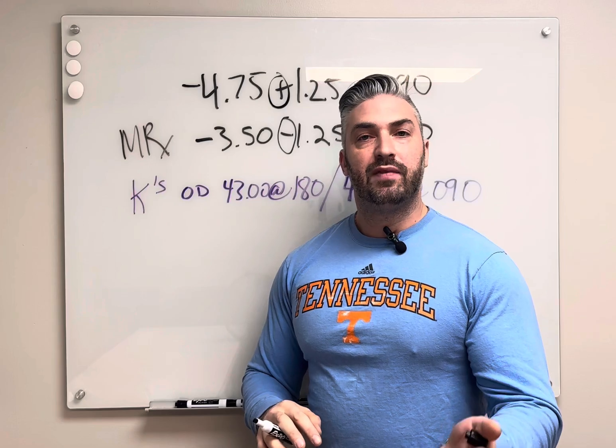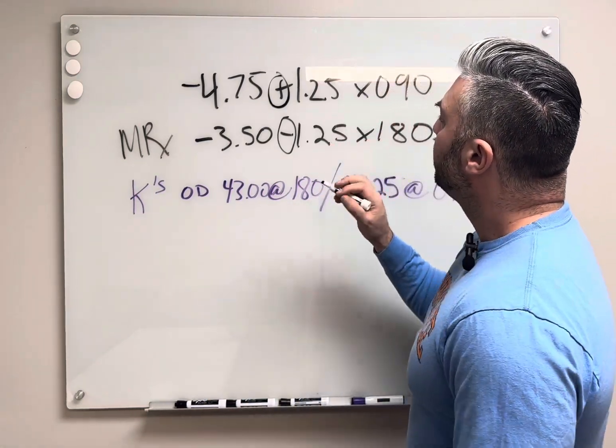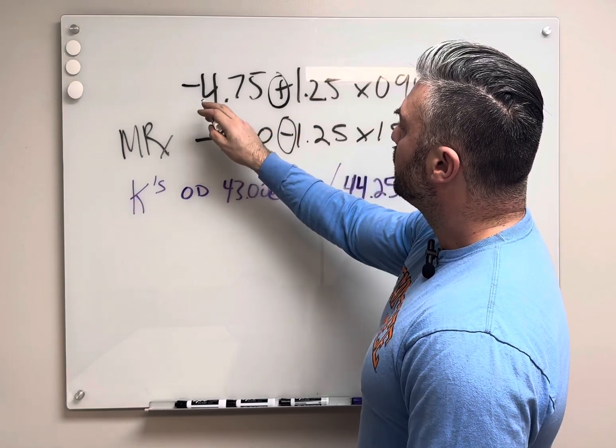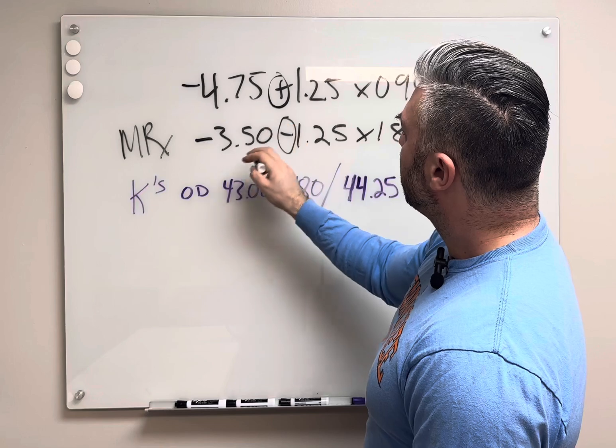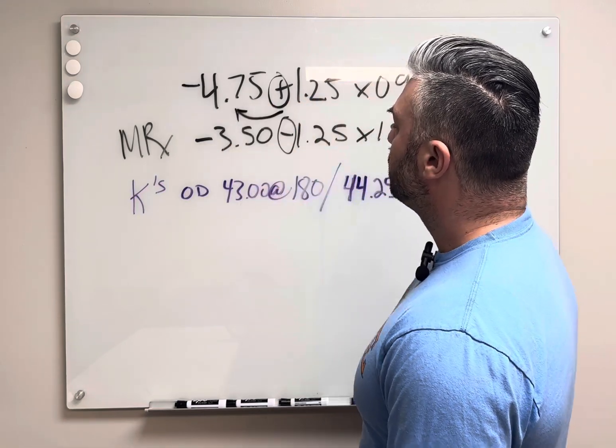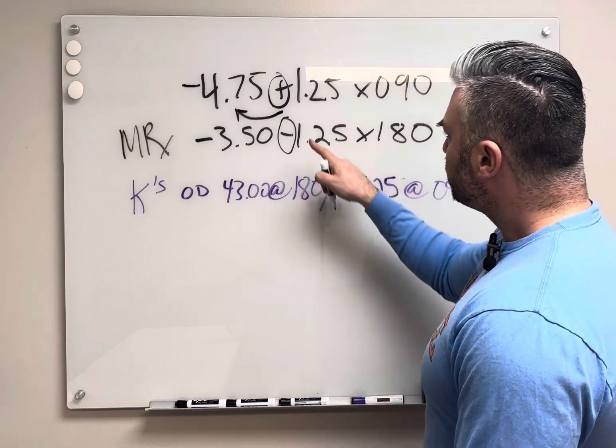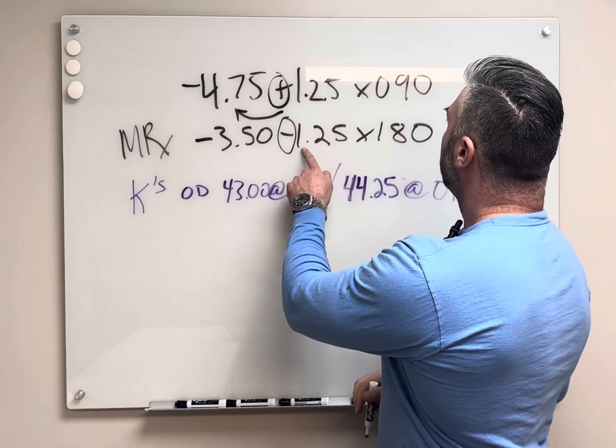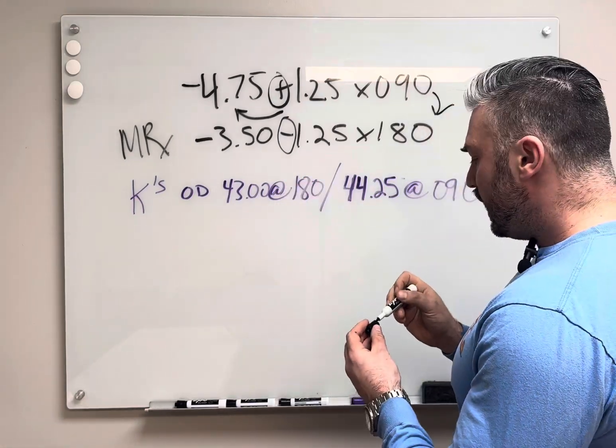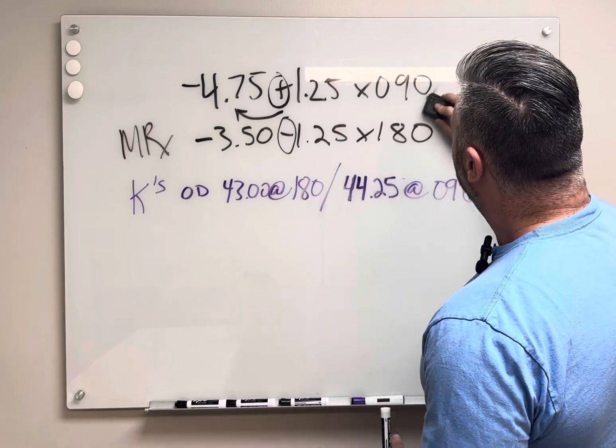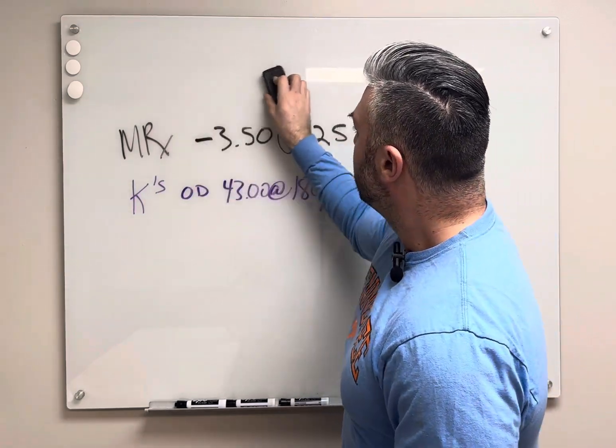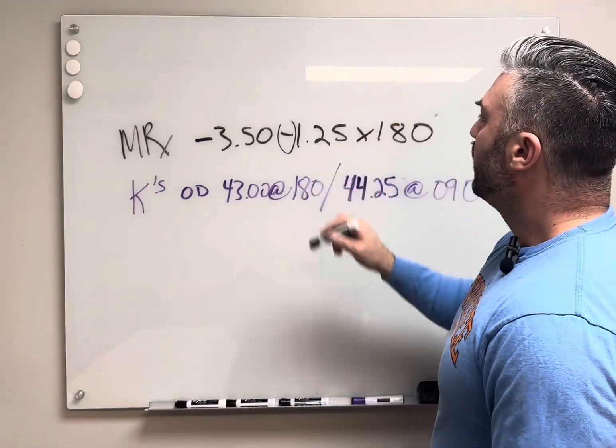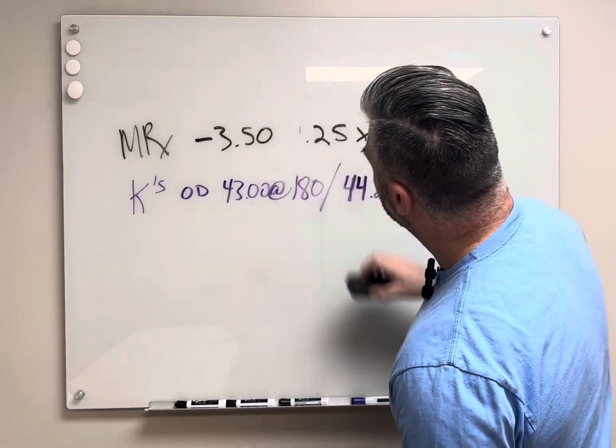So we know if we see it in plus cylinder form that's not correct. We have to transpose. What you do is you add the cylinder value, the plus 1.25 to the minus 4.75, which would give you negative 3.50. You just change the sign, so instead of plus 1.25 it's minus 1.25, and then you always rotate the axis 90 degrees. So first step for any contact lens fitting problem is to transpose it if it's not already in minus cylinder form.